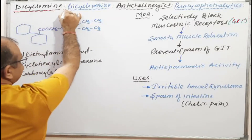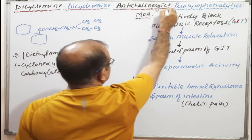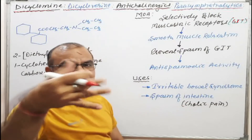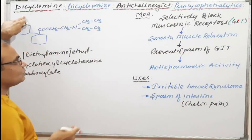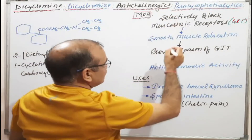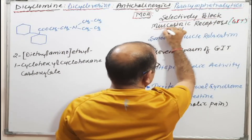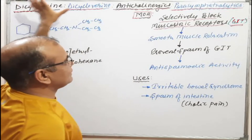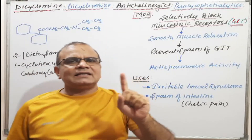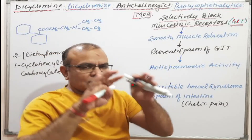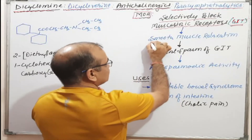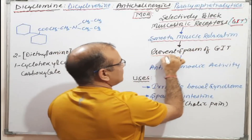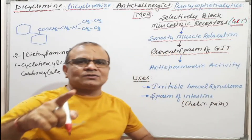Dicyclomene is also known as Dicycloverine. It belongs to the anticholinergic category, which is also known as a parasympatholytic agent. Regarding the mechanism of action, it selectively blocks muscarinic receptors present in the GIT — gastrointestinal tract — which results in smooth muscle relaxation in the gastrointestinal tract.